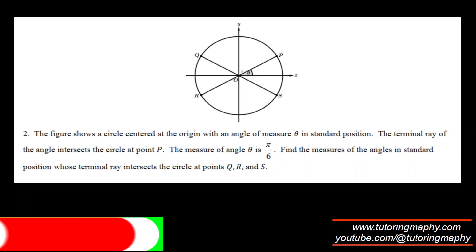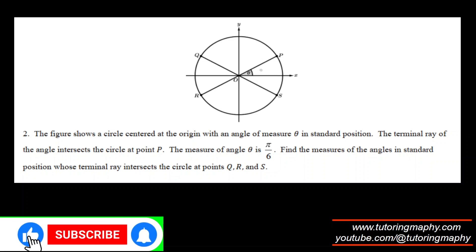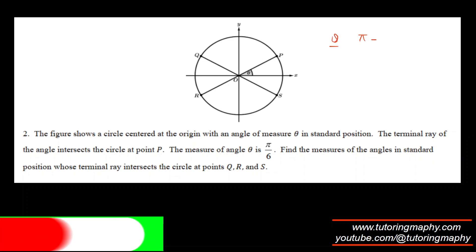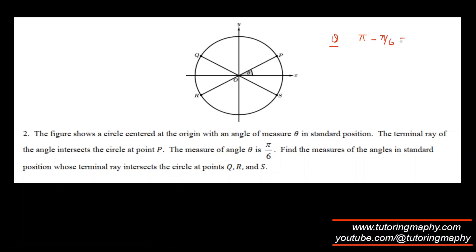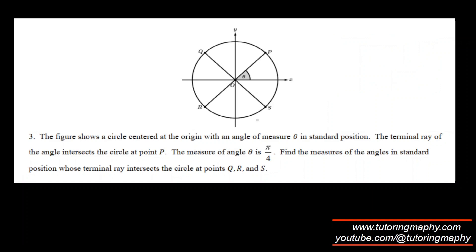Now, if you understood that, then these questions are pretty easy. For Q, the answer will be π minus π/6 which is 5π/6. For R it will be π plus π/6 which is 7π/6. And for S it is 2π minus π/6 which is 11π/6.